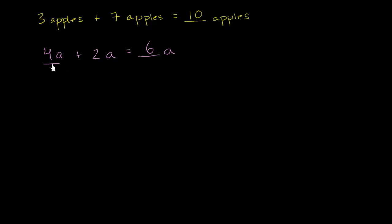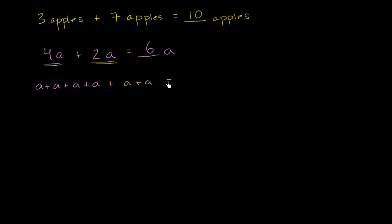You can literally think of four A's as A plus A plus A plus A. And if to that I add another two A's — plus A plus A — that's two A's right over there. How many A's do I now have? Counting them: one, two, three, four, five, six. I now have six A's.